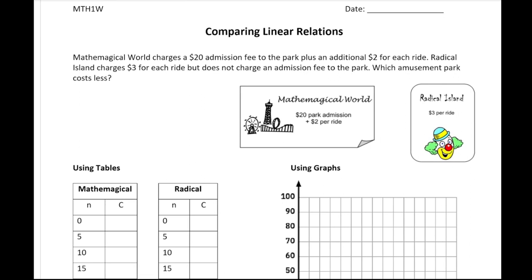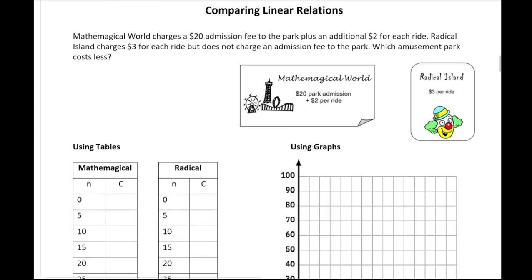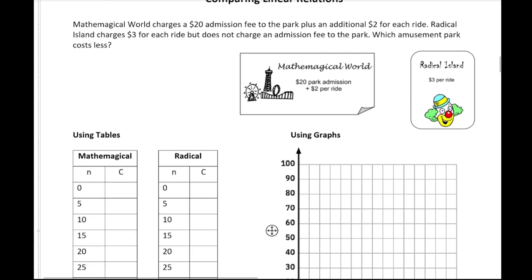In our scenario we have two amusement parks. Math Magical World charges a $20 admission fee to the park plus an additional $2 for each ride. Radical Island charges $3 for each ride but does not charge an admission fee. So we want to figure out which amusement park costs less. Right off the bat you might say well $3 per ride compared to the $20 admission means Radical Island is cheaper — but is that going to be the same for every scenario?